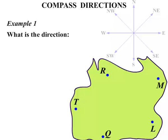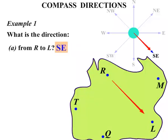And we're asked, what is the direction in part A, from R to L? Well, from R, so we're starting from R and we're going towards L. So that's the arrow direction there. If we repeat that arrow direction on our compass, we can see that it is South East. The direction is South East.